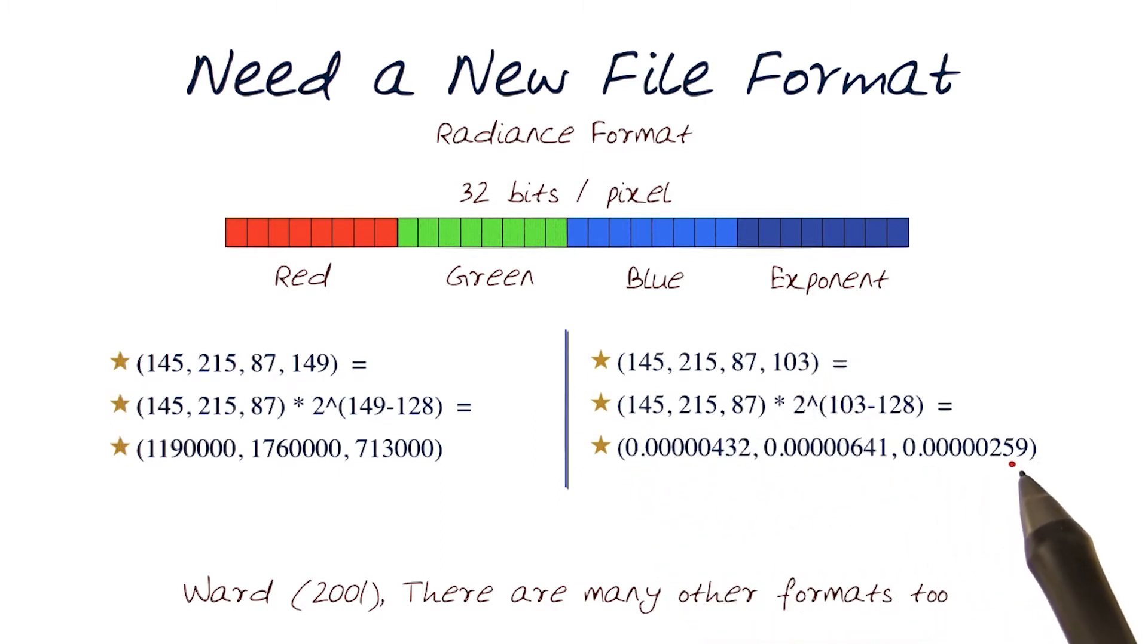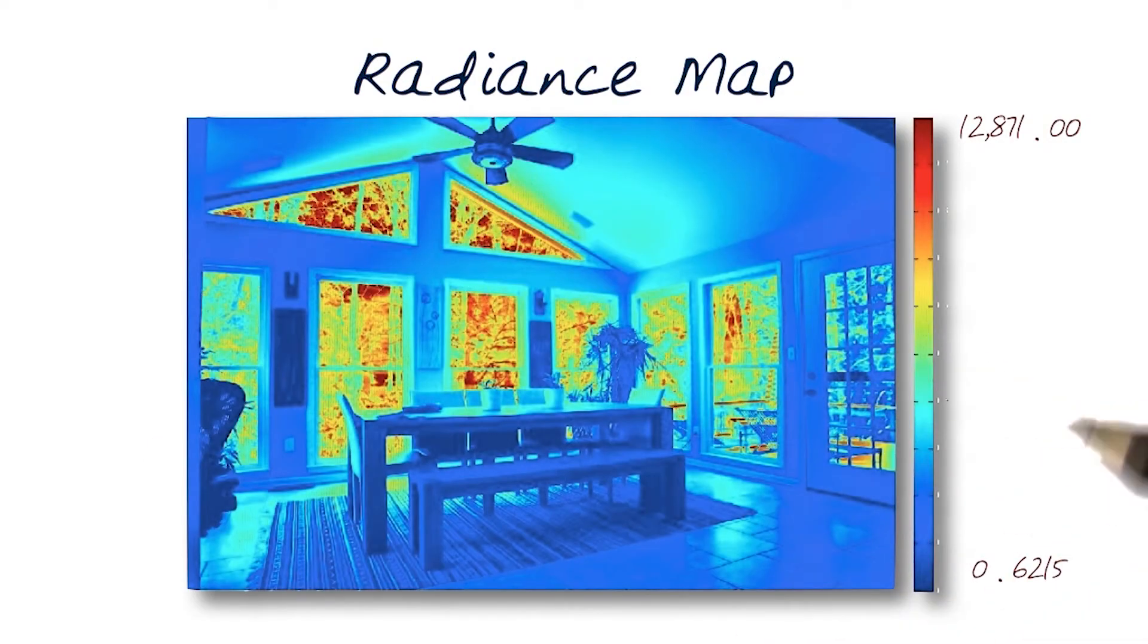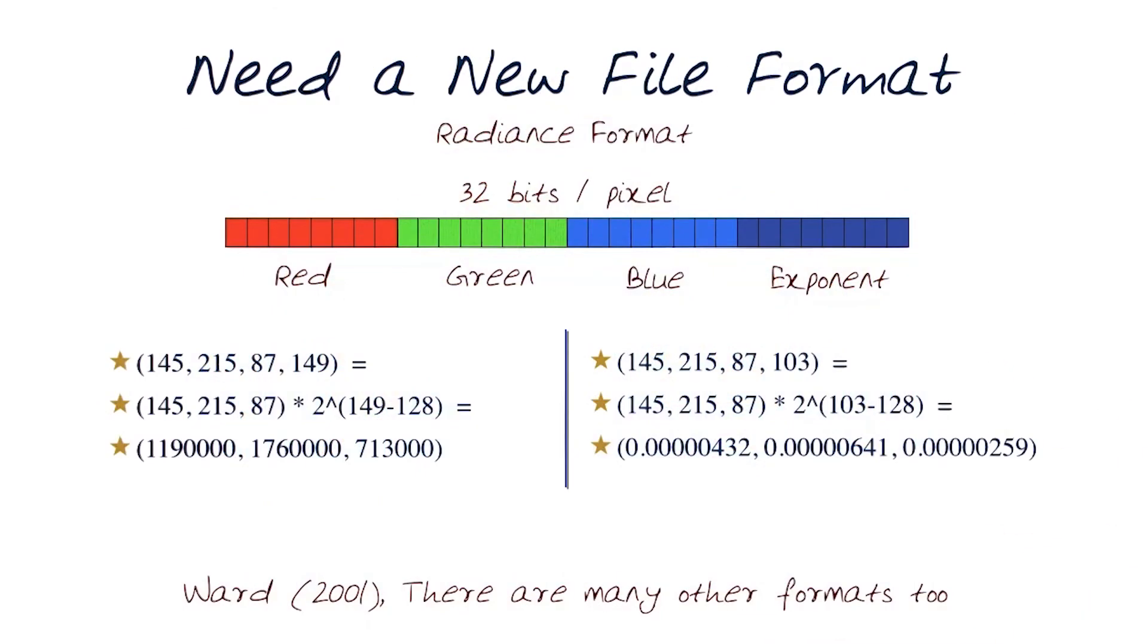So now this allows us to go from very small numbers all the way up to large numbers. And of course, this format can be used to save an image like this into a file. This is a proposed representation of a file format from Ward. There are many other similar formats. I do encourage you to look at Radiance map formats on the web.